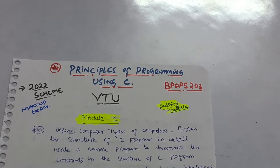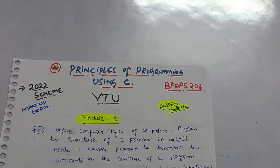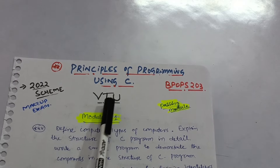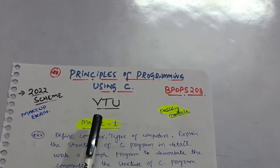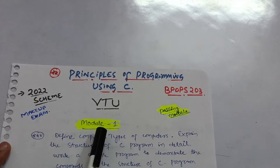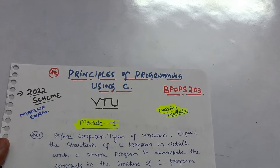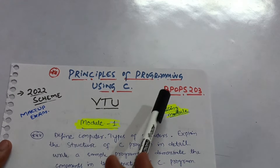Hello everyone, welcome back to my channel. As make-up examinations are near, if you have a backlog in the subject 'Principles of Programming Using C' — this is common to all branches — this video is especially for the 2022 scheme first-year students. It may be a new subject for you, and if it is backlogged it becomes a hurdle. The subject code is BPOPS203.